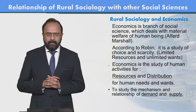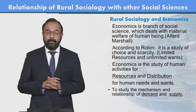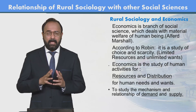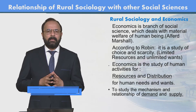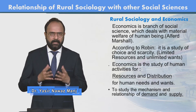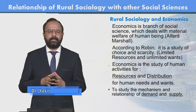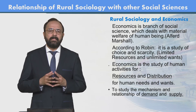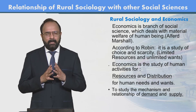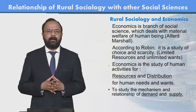According to Robin, economics is a study of choice and scarcity — limited resources and unlimited wants. Economics teaches us that human wants, the desires of human beings, are unlimited, while resources everywhere are limited. So how do we live with unlimited desires within limited resources?